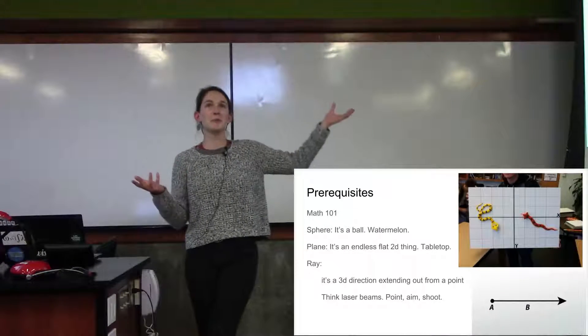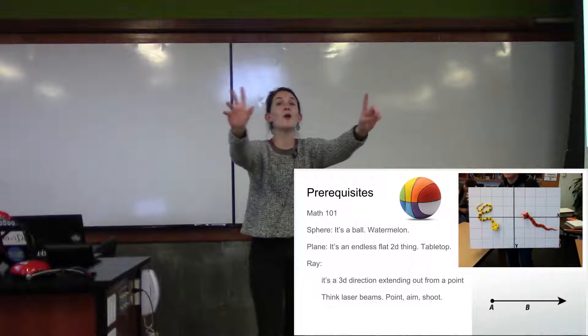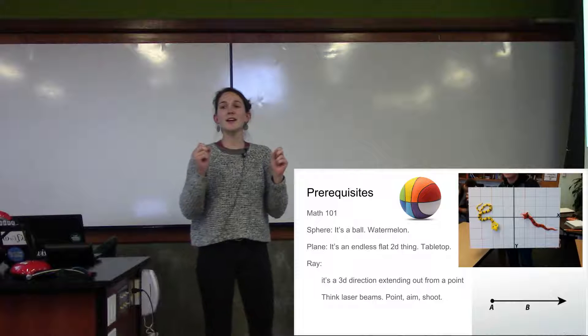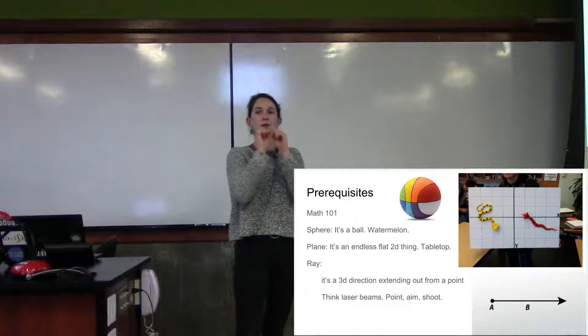Prerequisites, you should probably know like basic shapes, and the important thing is you should know what a ray is. A ray is basically like a direction from a point, just point and shoot.